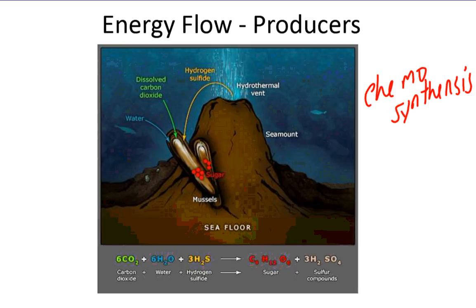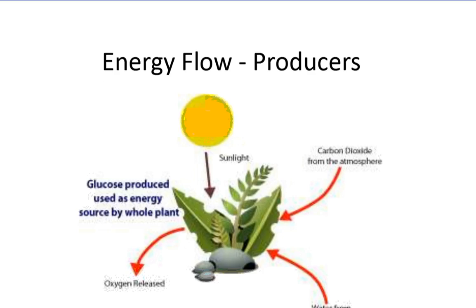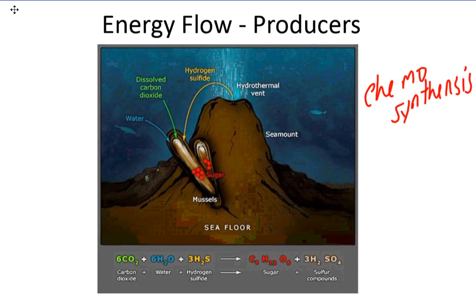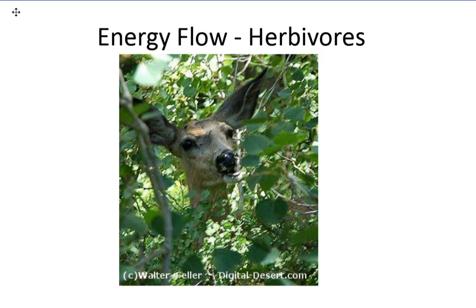Chemosynthesis is the process where you use chemicals to make food. Chemosynthesis is a very small portion of what's going on in the earth, mostly photosynthesis. Then you have consumers, organisms that eat other organisms. Different kinds of consumers are herbivores, like our friend the deer. It consumes and eats plants only. An herbivore.